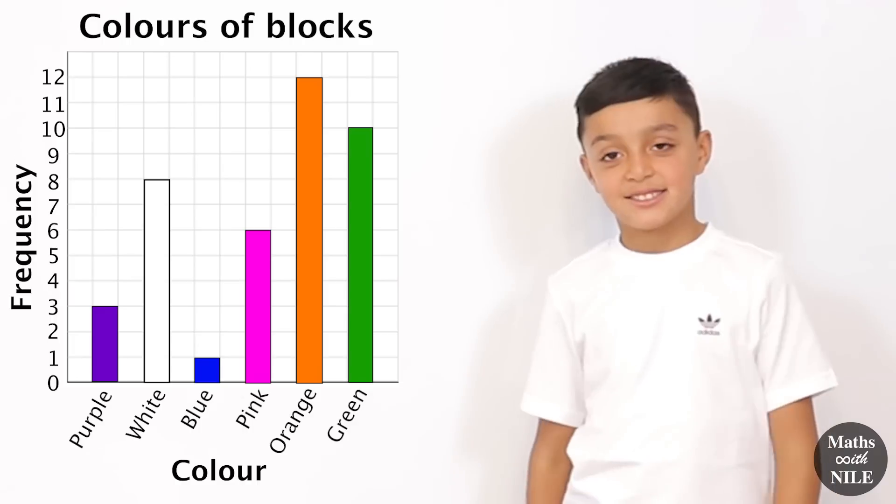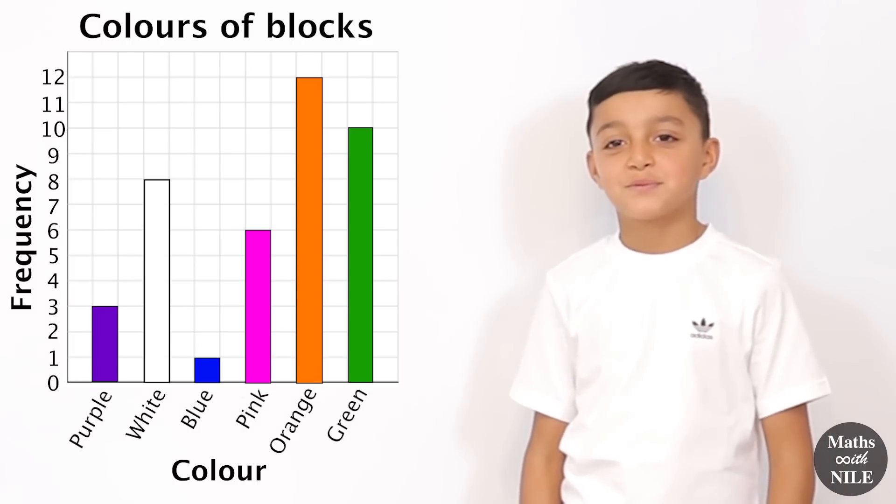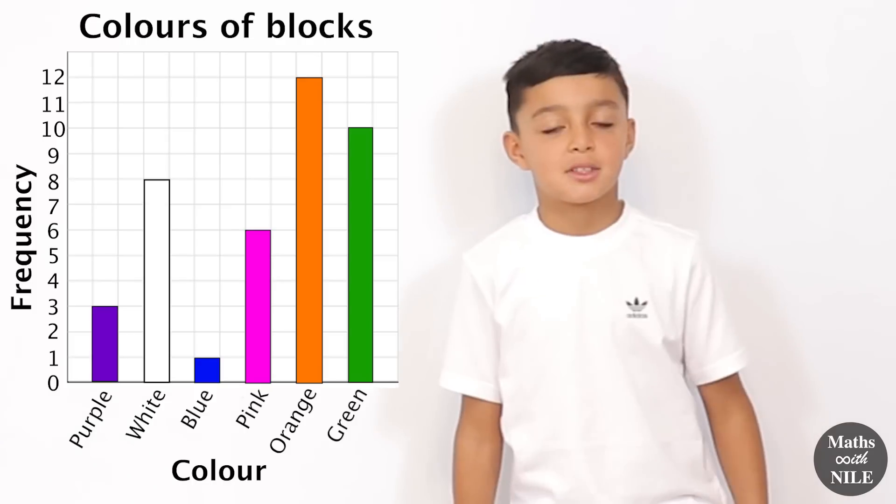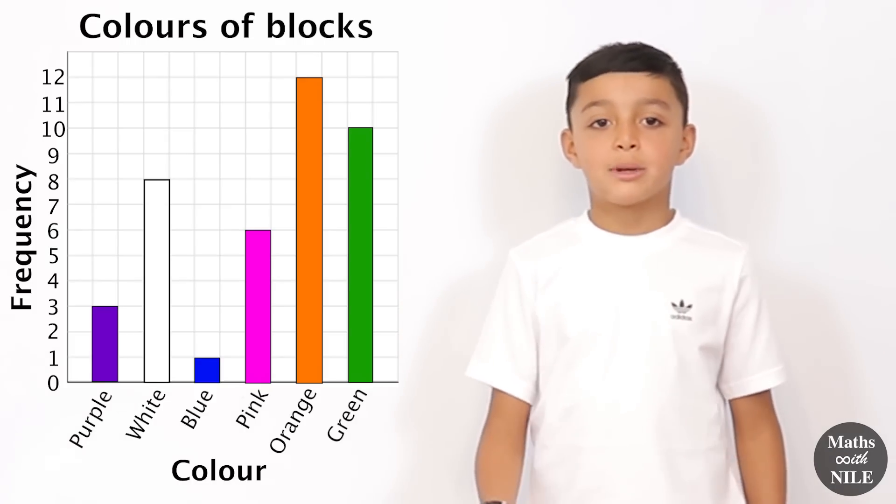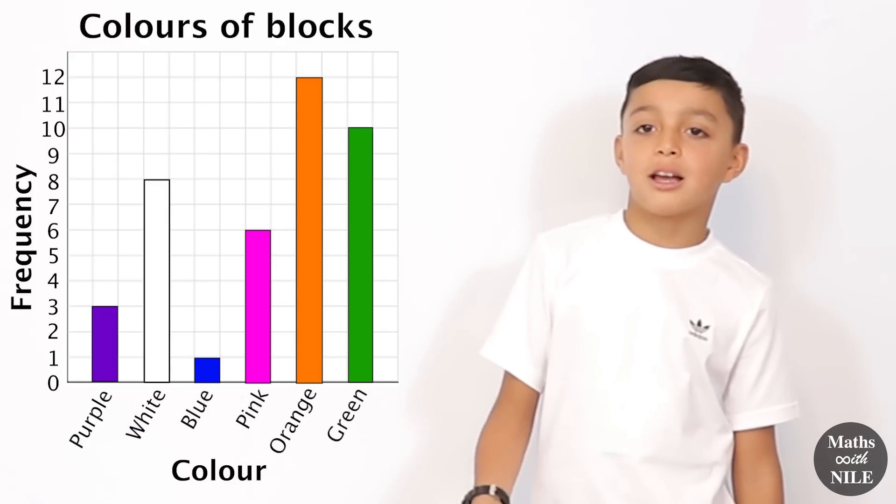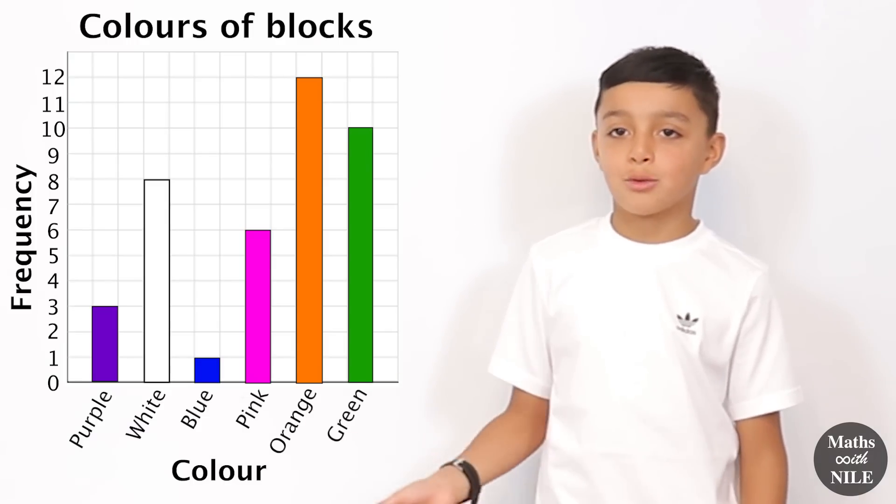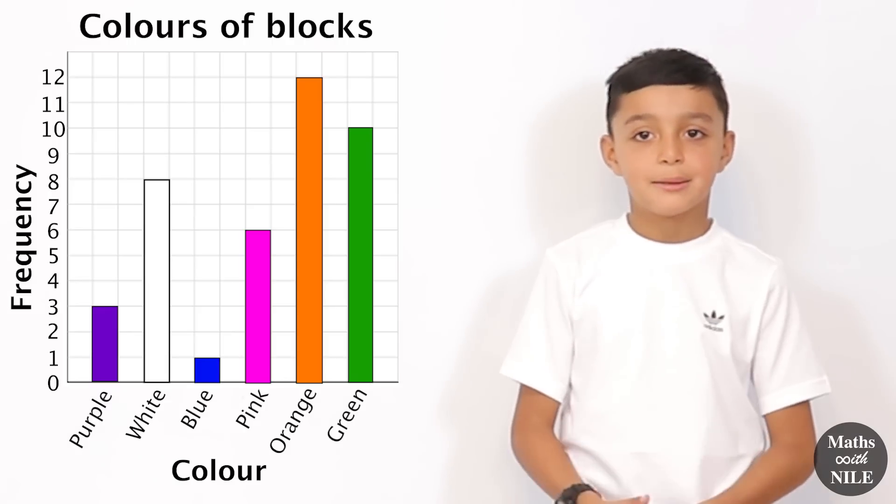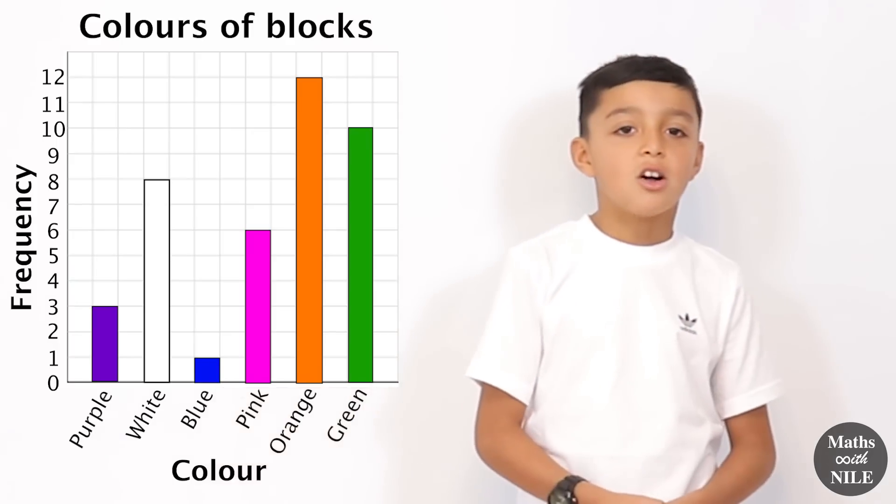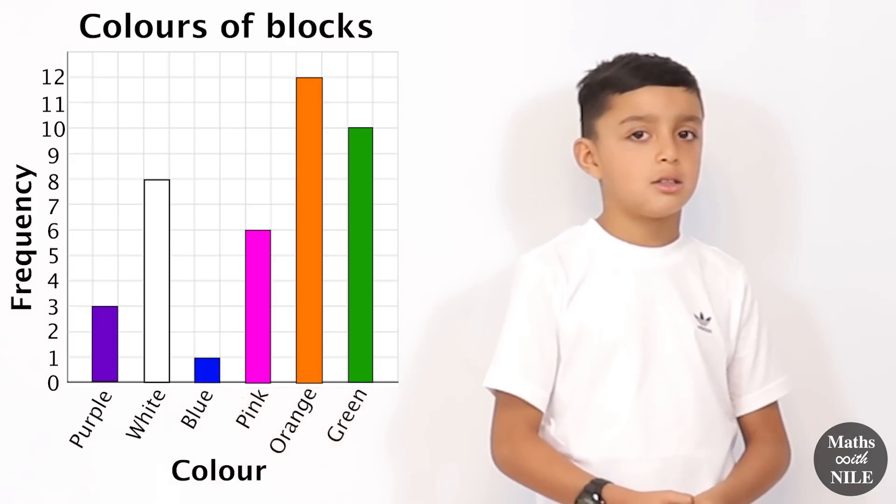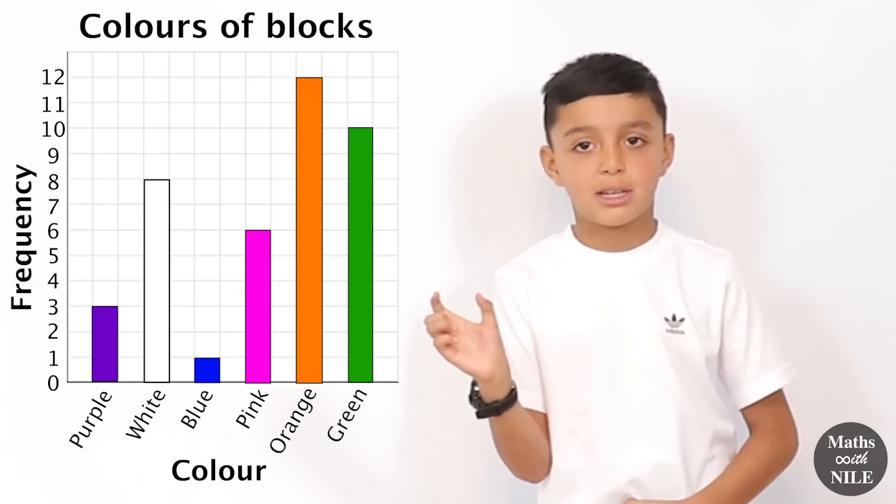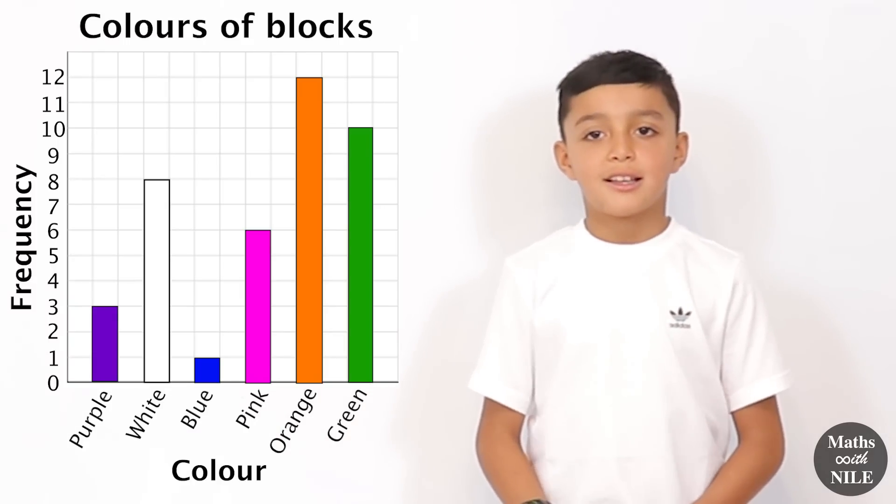So before we finish, can you just tell us one more time the important bits that we need to have when we're doing a bar chart? We need our title, we need our frequency, and we need our label at the bottom. It can be colours or animals or whatever. Exactly. What data we're collecting. And tell me about the bars? They need to all have a space in between and they all need to be the same width. Very good, Niall.